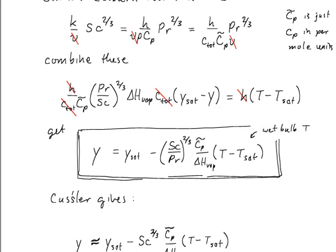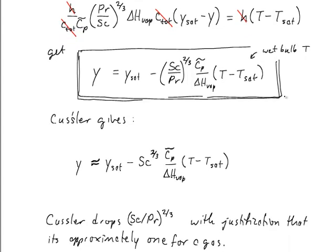For the composition, the mole fraction of water out in the bulk vapor, is equal to the mole fraction of water at saturation minus this factor. This is a positive number. So the mole fraction out in the bulk is always going to be smaller than the mole fraction at the interface of the wet cloth. So this includes a ratio of Schmidt and Prandtl numbers to the power two thirds. It includes a ratio of the heat capacity to the latent heat. And it includes that temperature difference. And this is what you would read off of the two wet bulb thermometers.